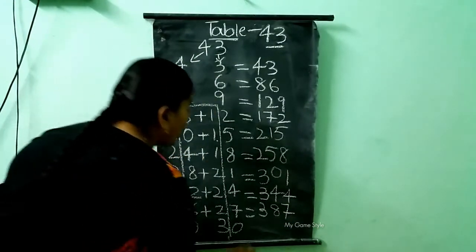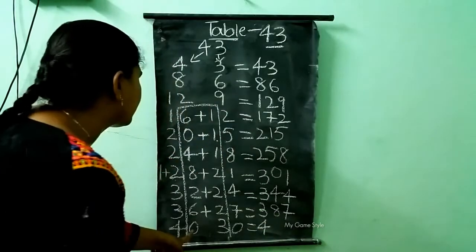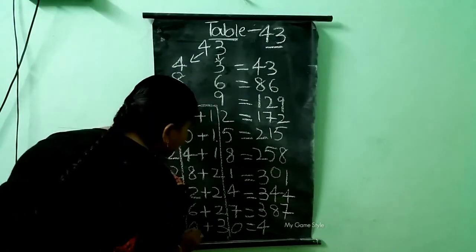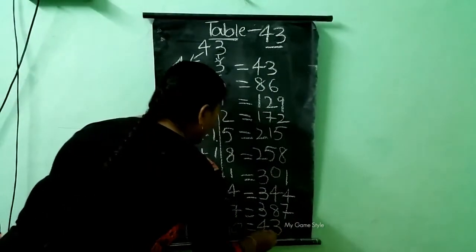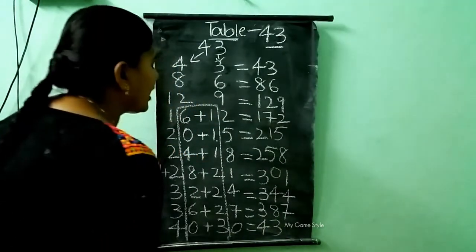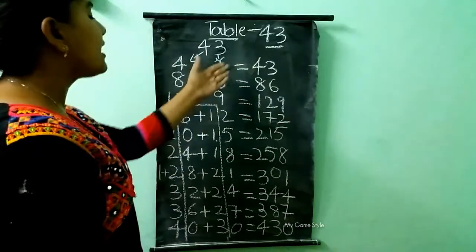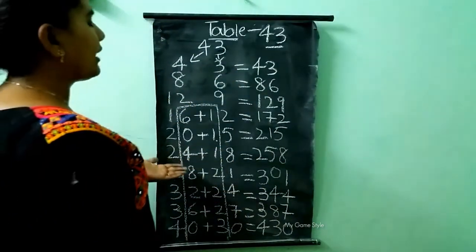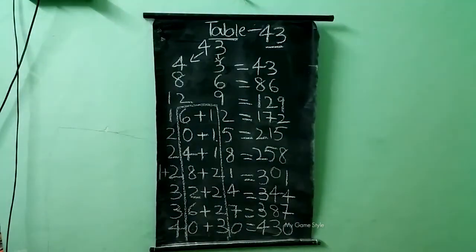Next thing — here 4 is there, so I am writing 4 as it is. Next we add these both numbers: 0 plus 3, how much? 3. And here 0 is there, so I am writing 0 as it is. This is the 43 table. This is how we need to read and write in an easy way. Thank you for watching this video.